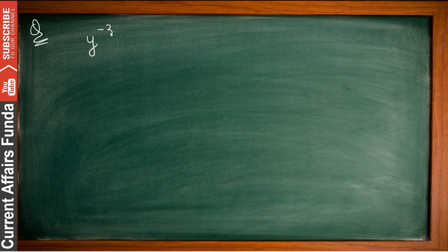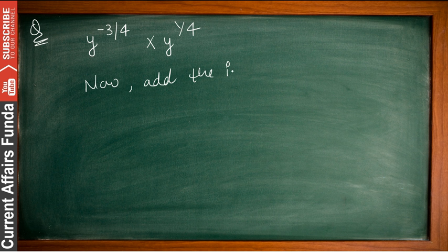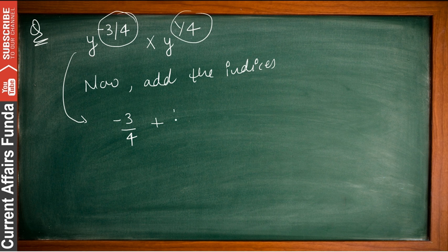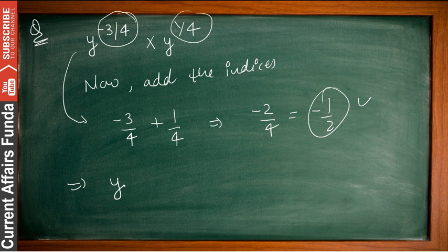Suppose you have another equation: simplify y to the power minus 3 by 4, multiplied by y to the power 1 by 4. Add all the indices: minus 3 by 4 plus 1 by 4 equals minus 2 by 4, which simplifies to minus 1 by 2. So the power of y is minus 1 by 2, and y to the power minus 1 by 2 is your answer — the most simplified form.